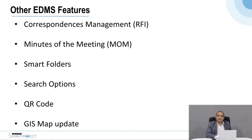The following are the other functionalities of REN Smart Project: Correspondence Management, Minutes of the Meeting, Smart Folders, Search, QR Code Printing, and GIS Map. Let me take you through each of these.